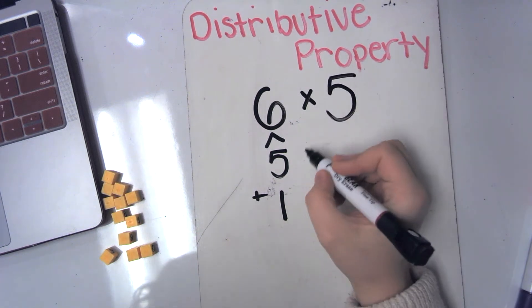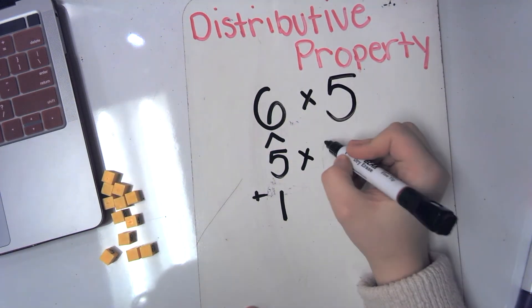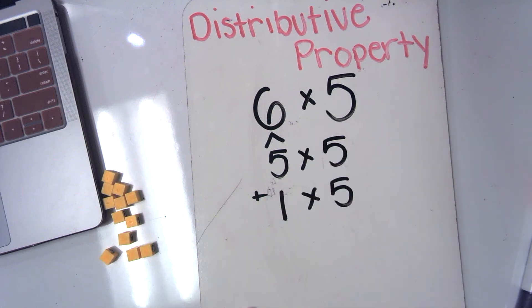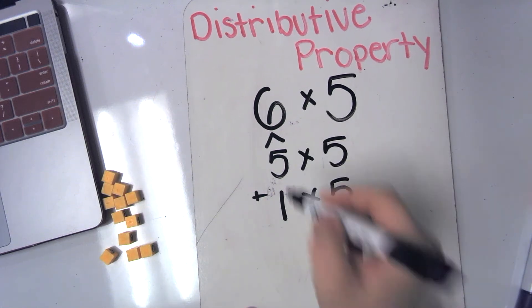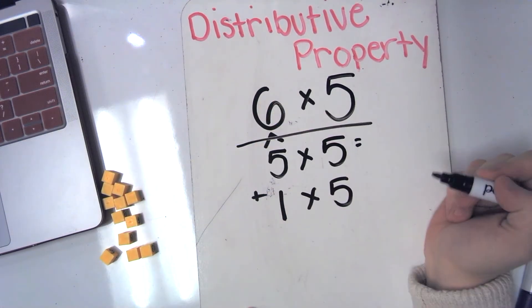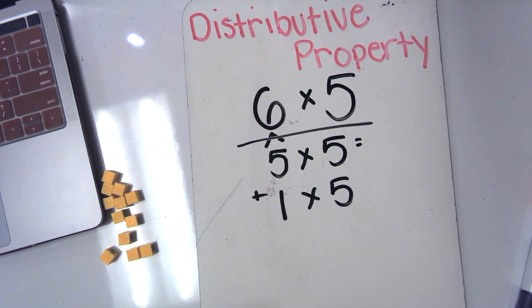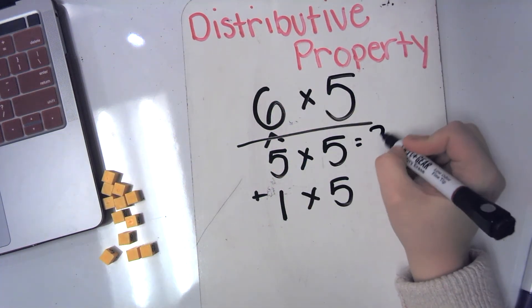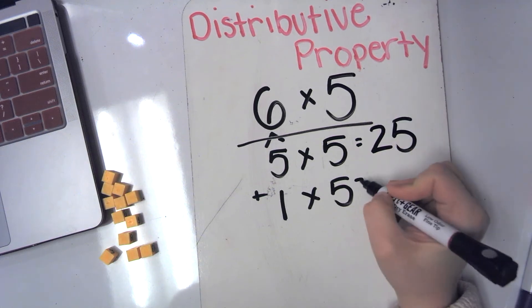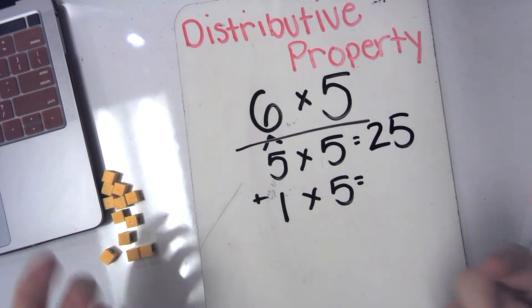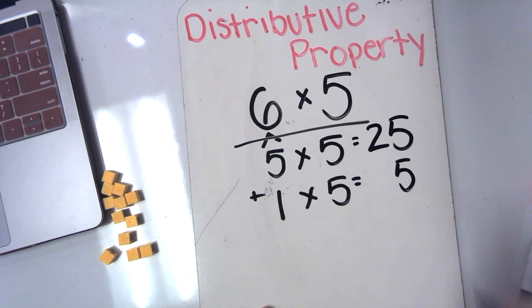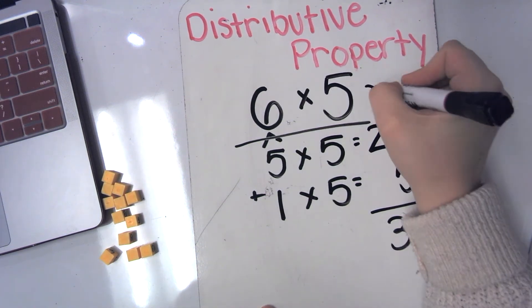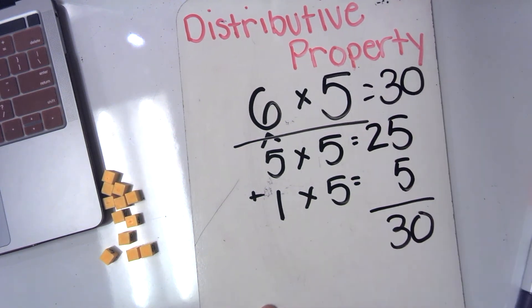One number stays the same. Five groups of five plus one group of five is the same thing as six groups of five. So let's look at that now. Five times five. Skip count by five, five times. Five, ten, fifteen, twenty, twenty-five. One group of five. Five. Five's looking in a mirror. It sees its own reflection. Twenty-five plus five, well, that's thirty. So six times five must be thirty.